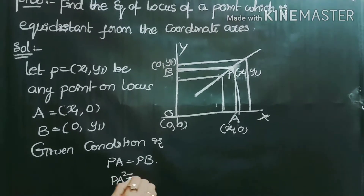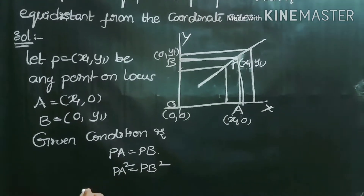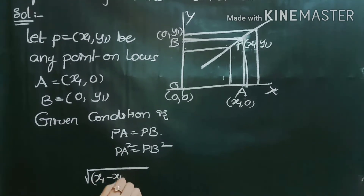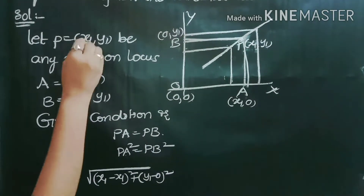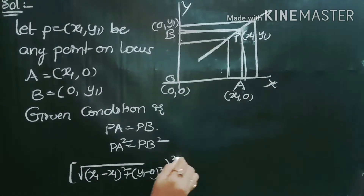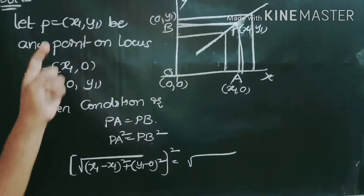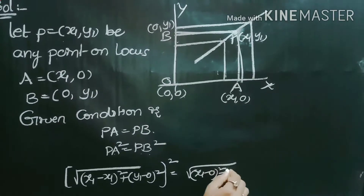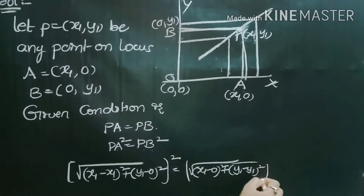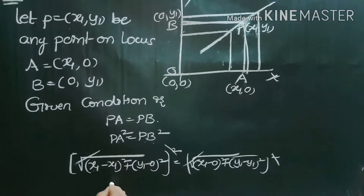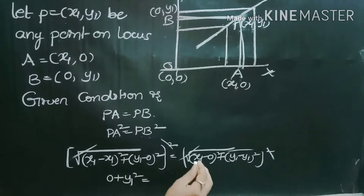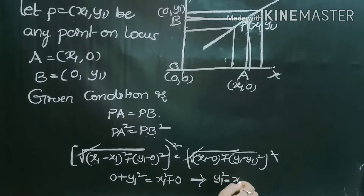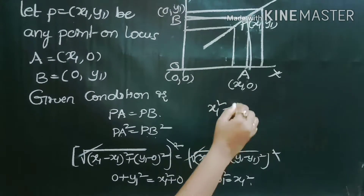Squaring both sides: PA² = PB². Substituting the distances — PA is the distance from P = (x1, y1) to A = (x1, 0), giving √((x1−x1)² + (y1−0)²), and PB is the distance from P to B = (0, y1), giving √((x1−0)² + (y1−y1)²). After squaring, the square roots cancel: y1² = x1², which implies x1² − y1² = 0.